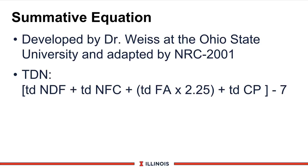The newest equation from the NRC 2001 is called the summative equation, developed by Dr. Bill Weiss at The Ohio State University. TDN is calculated by taking the truly digestible NDF (neutral detergent fiber, the cell wall), plus truly digestible NFC (sugars, starches, and pectins), plus truly digestible fatty acids (fats and oils) multiplied by 2.25, plus truly digestible crude protein — then minus 7 as a constant from a regression equation. That is how TDN is now calculated in our models and in the new NRC.